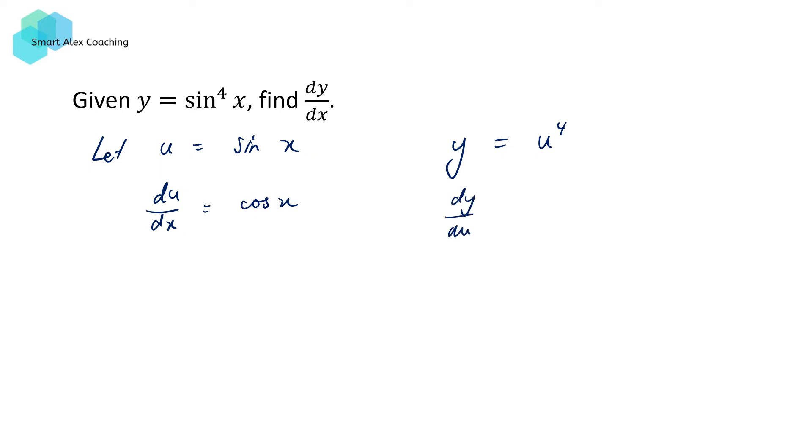du/dx equals cos x. dy/du equals 4u cubed. Same thing, dy/dx can be written as a product of dy/du times du/dx. This is going to give us 4u³ times cos x. But we made the substitution that u equals sin x. So this expression can be written as 4sin³x cos x. So therefore, the derivative of sin⁴x equals 4sin³x times cos x.